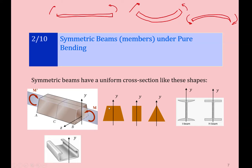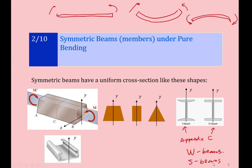Symmetric bending means the cross-section is symmetric with respect to the y-axis. Symmetric cross-sections can be trapezoidal, rectangular, square, triangular, or even the common industry-standard I-beam, H-beam, or W-beam. More information on these can be found in Appendix C, which covers I-beams, W-beams, S-beams, etc. Another possibility is the C-shape cross-section. These are all examples of what we call symmetric beams.